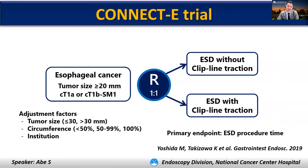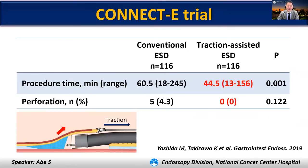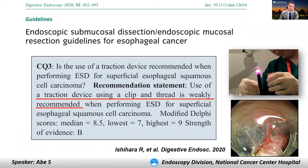Allow me to introduce a randomized controlled trial named the CONNECT-E trial. Patients with esophageal SCC were randomly assigned to either ESD without clip-line traction or ESD with clip-line traction. The primary endpoint was ESD procedure time. The procedure time was significantly shorter in the traction-assisted ESD group. Notably, the perforation rate in the traction-assisted ESD group was 0%. The clip-line traction is beneficial in reducing the risk of intraoperative perforation thanks to better exposure of the submucosal dissection plane. The current Japanese ESD guideline recommends using clip-line traction.